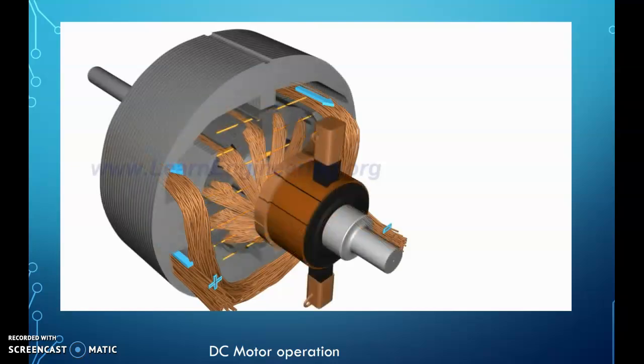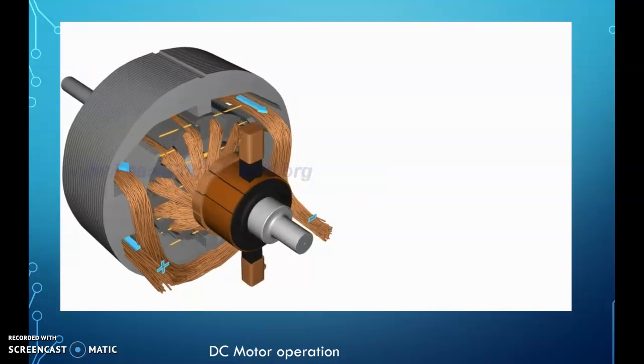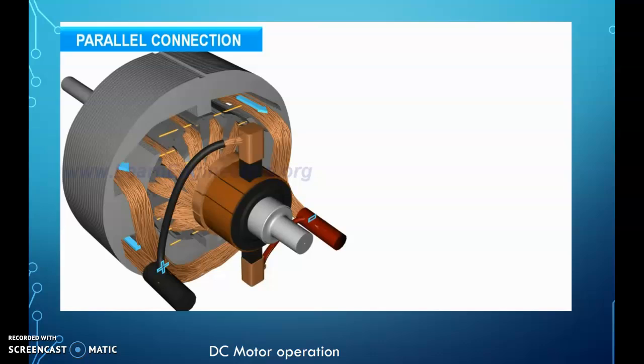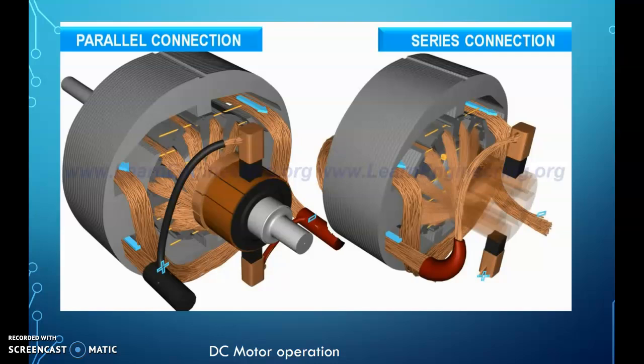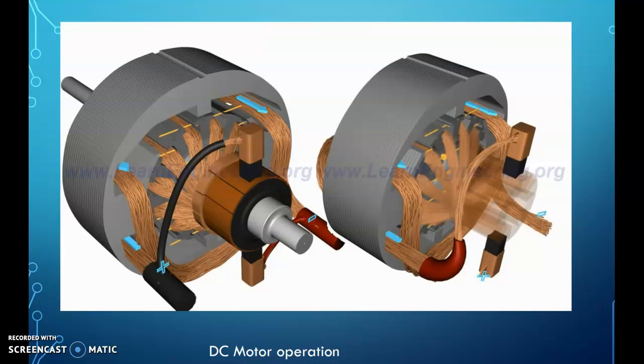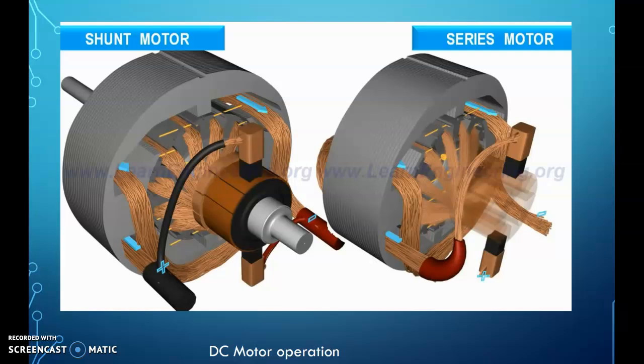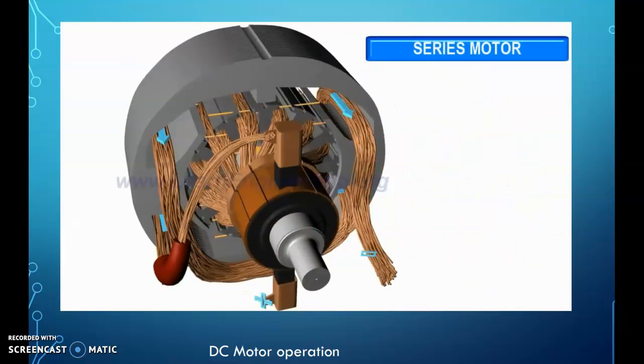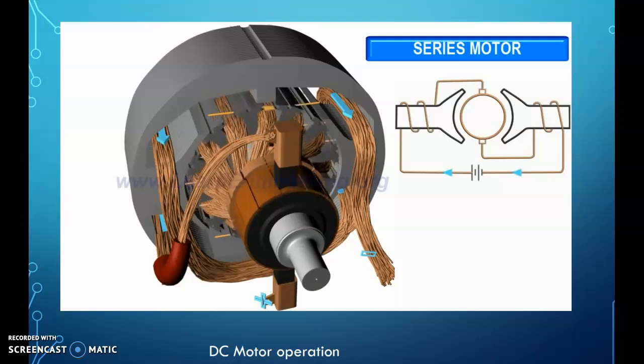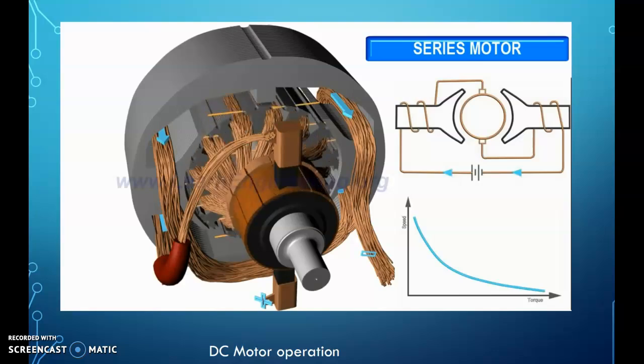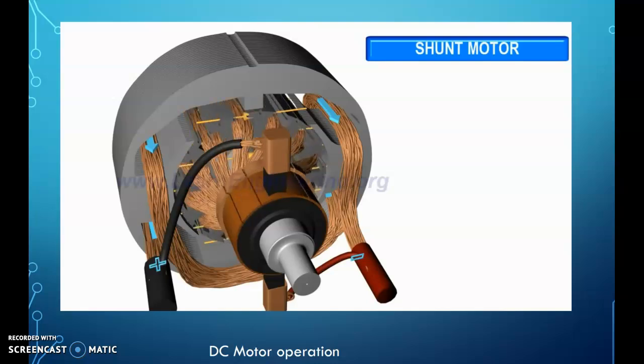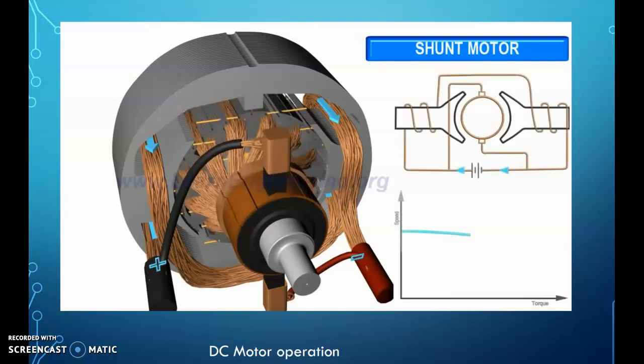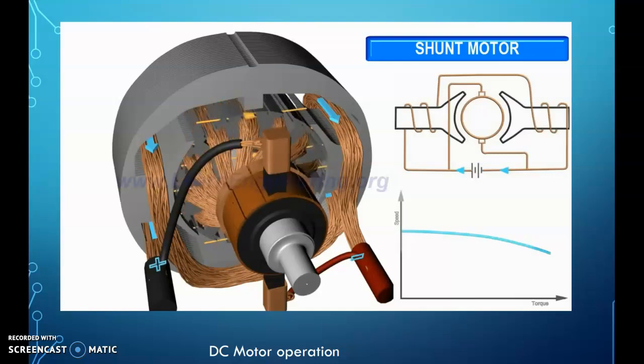The field coils can be connected to the rotor windings in two different ways: parallel or series. The result is two different kinds of DC motor construction, a shunt and a series motor. The series-wound motor has good starting torque, but its speed drops drastically with the load. The shunt motor has low starting torque, but it is able to run almost at constant speed, irrespective of the load acting on the motor.